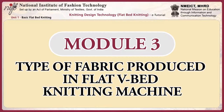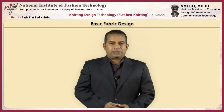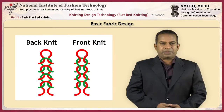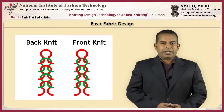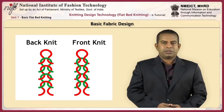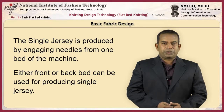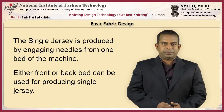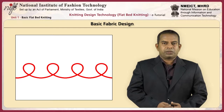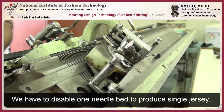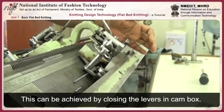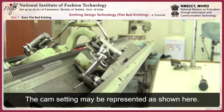Let us learn about the various types of fabric produced in flat V-bed knitting machines. The basic fabric designs are single jersey and double jersey. Looking at a loop closely, you can notice a prominent V-shape formation on one side and a horizontal streak formation on the other. If you see a fabric with V-shaped stitches on one side and horizontal streaks on the other, you are likely looking at a single jersey fabric. Single jersey is produced by engaging needles from one bed of the machine — either front or back bed. To disable one needle bed, close the levers in the cam box.